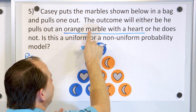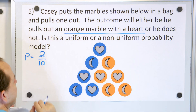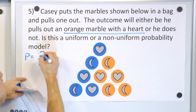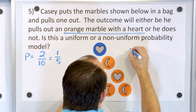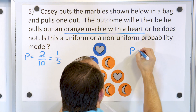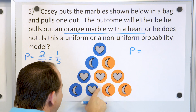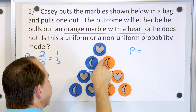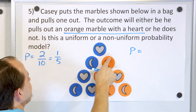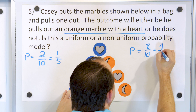The probability of an orange marble with a heart — here are the orange marbles, and there are only two of them that have a heart. So there are only two ways to get what we're looking for: two out of a total of ten. This reduces to one-fifth when you divide top and bottom by two. Now, what is the probability of not getting an orange marble with a heart? There are eight other possibilities, because all of these are not orange marbles with a heart. Eight out of ten, and dividing by two gives four-fifths.